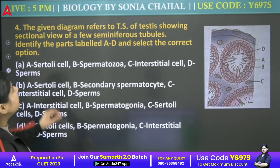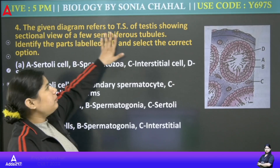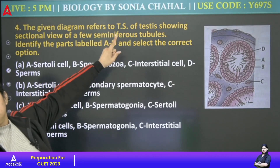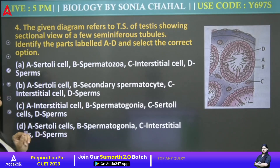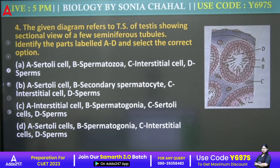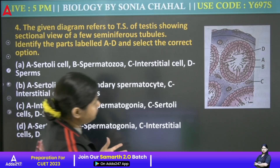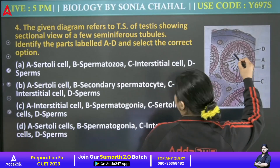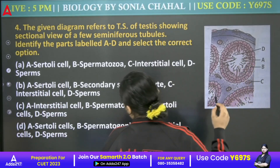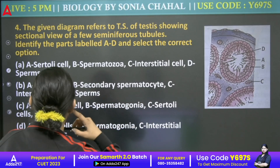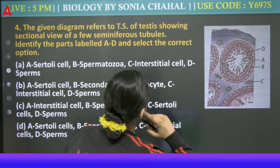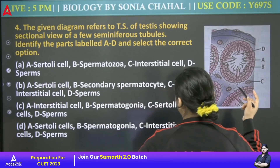Next: The given diagram refers to a transverse section of testes showing a sectional view of a few seminiferous tubules. Identify the parts labeled A to D and select the correct option. D here — D are our Sertoli cells. Wait — D should be our spermatocyte.